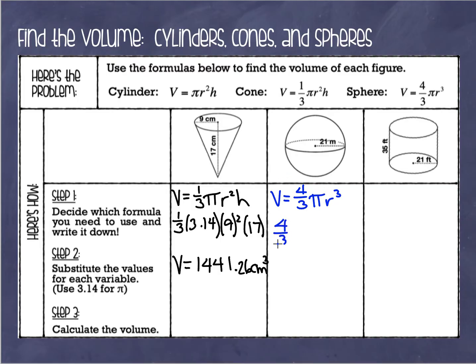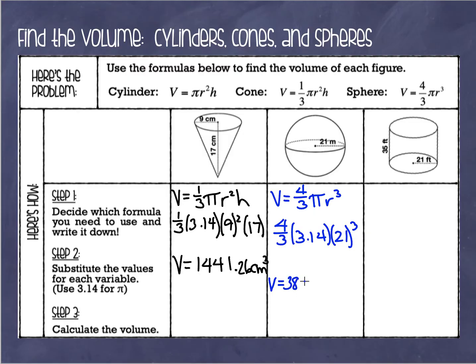Let's fill in our numbers: four thirds times 3.14 for pi, and the radius is 21 to the third power. When entering 21 to the third power, you can use the caret key on your calculator, or you can just do 21 times 21 times 21. Our answer for the volume is 38,772.72. This time it is meters cubed — so that has a very large volume.